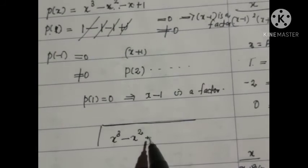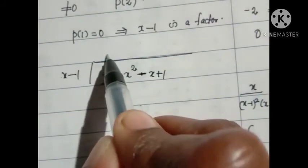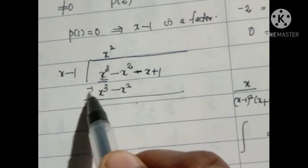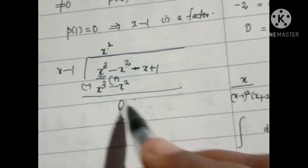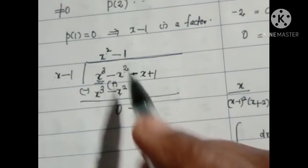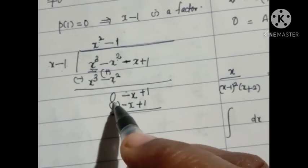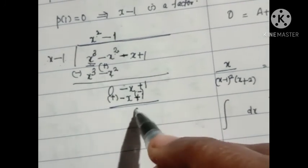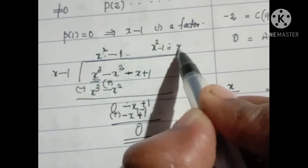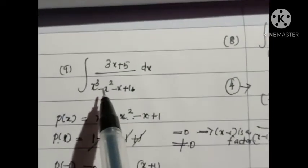Using long division, divide x³ − x² − x + 1 by (x − 1). Multiply x² by (x − 1) to get x³ − x², subtract; remainder is −x + 1. Then (−1)(x − 1) = −x + 1; subtract to get remainder 0. So the quotient is x² − 1, which factors as (x + 1)(x − 1). The three factors are (x − 1), (x + 1), and (x − 1).